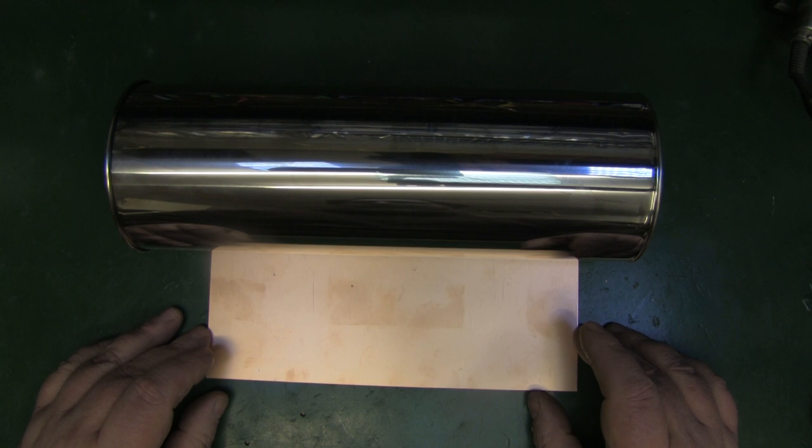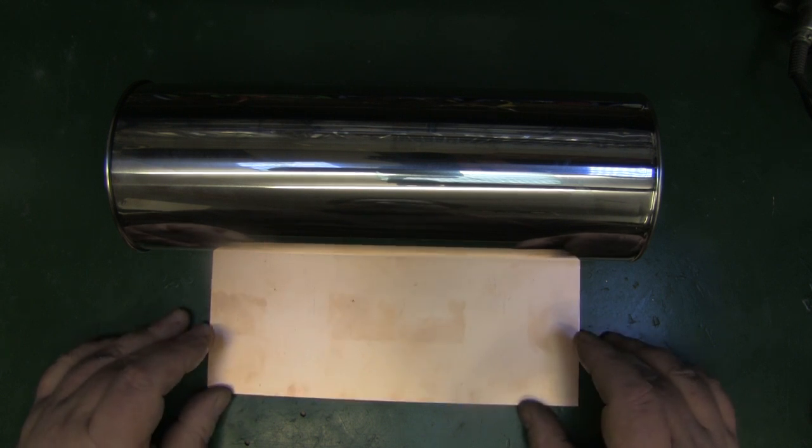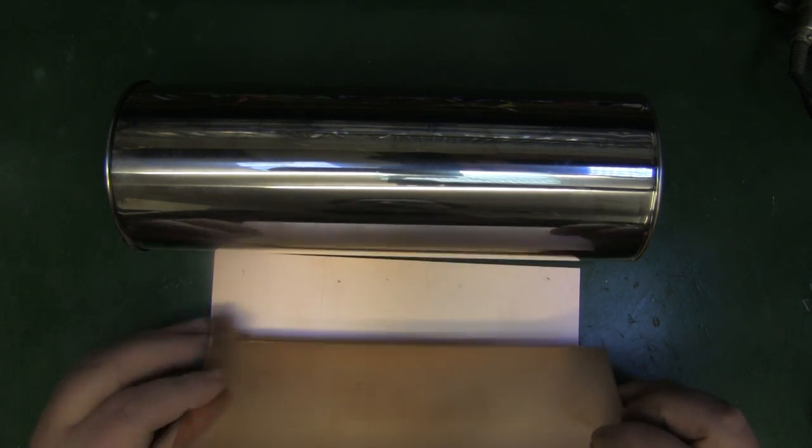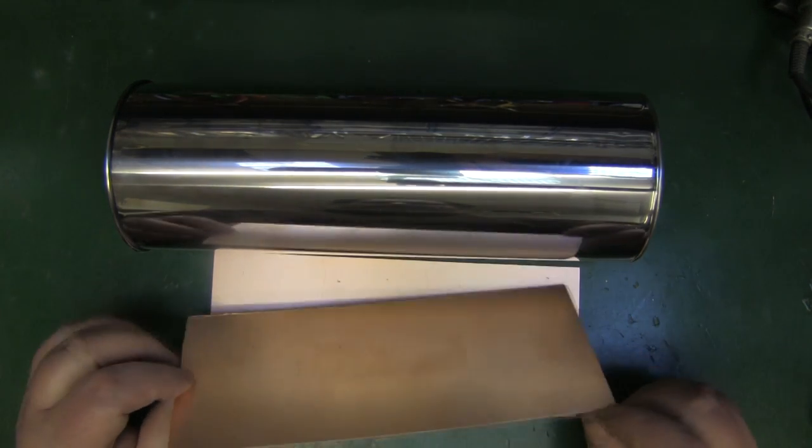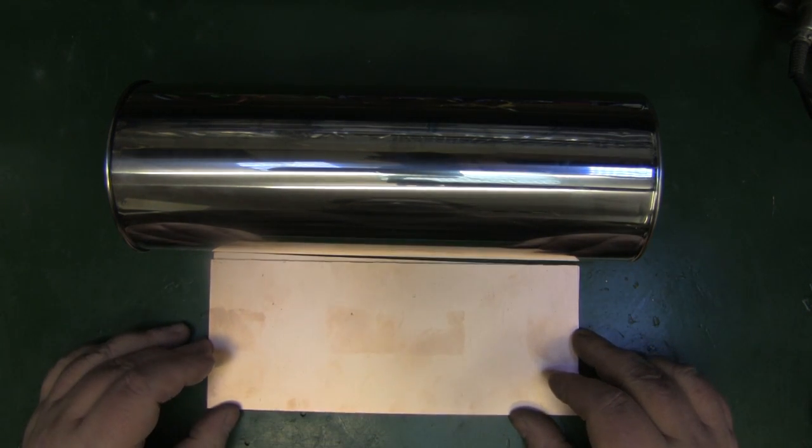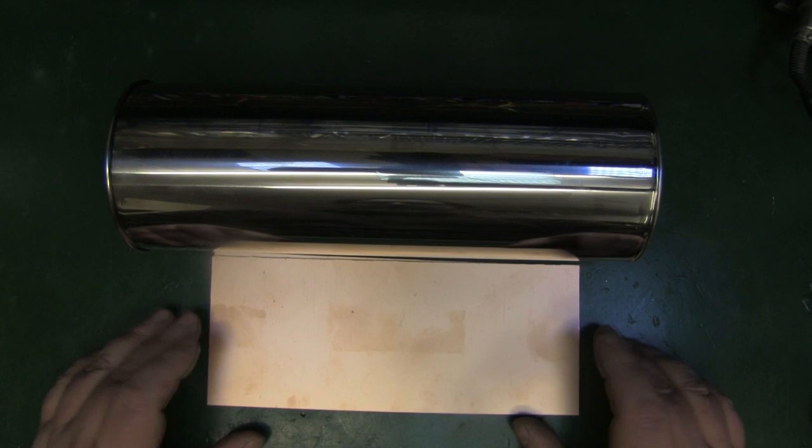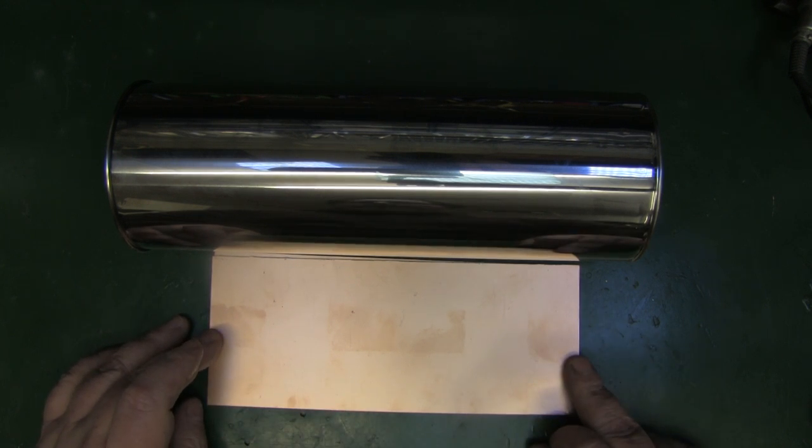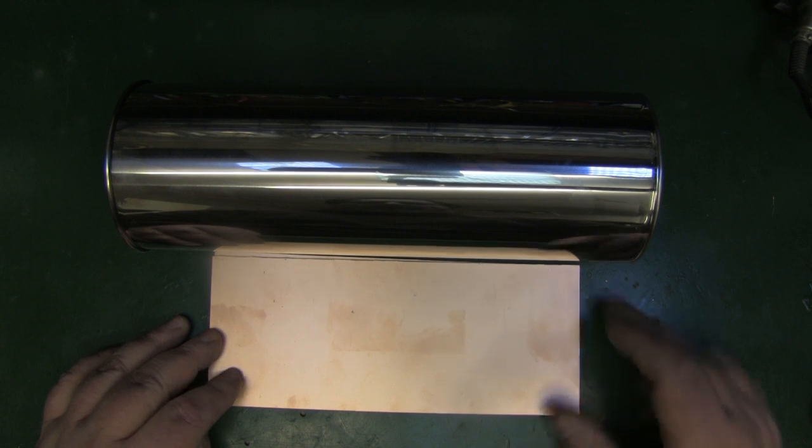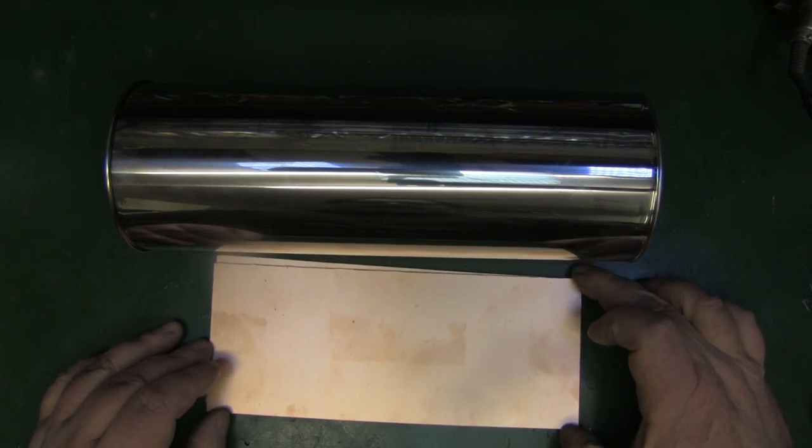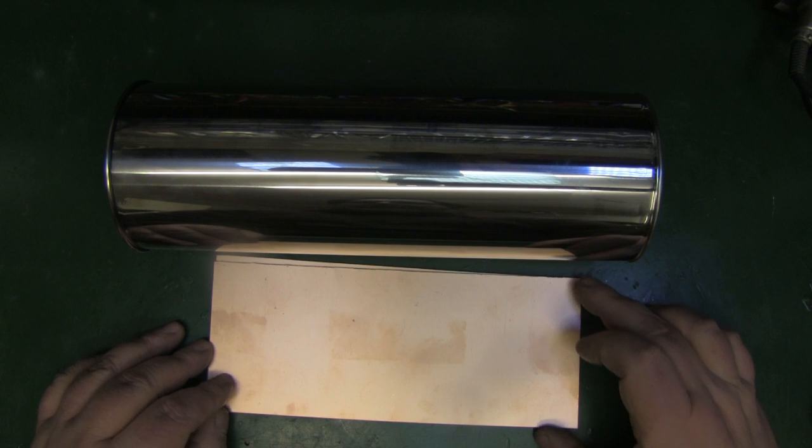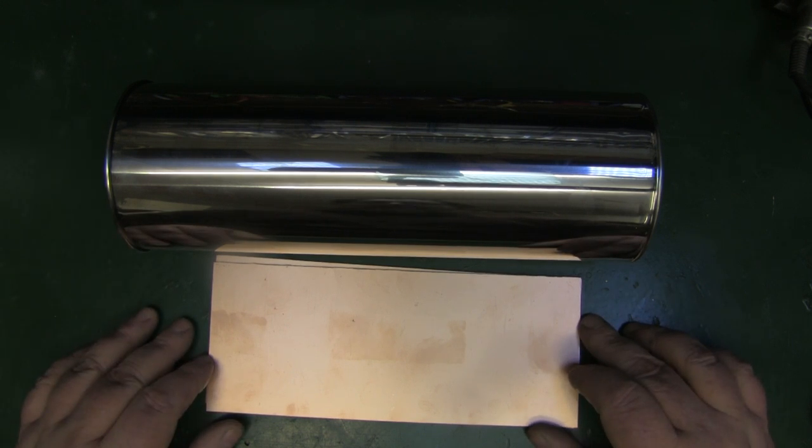So what I've got here is some single sided PCB copper clad PCB that I picked up off eBay pretty cheaply. It's a standard size that you can get off eBay, 220mm long and this was 100mm wide but I've cut it down to 90mm just so we can fit it inside the can.